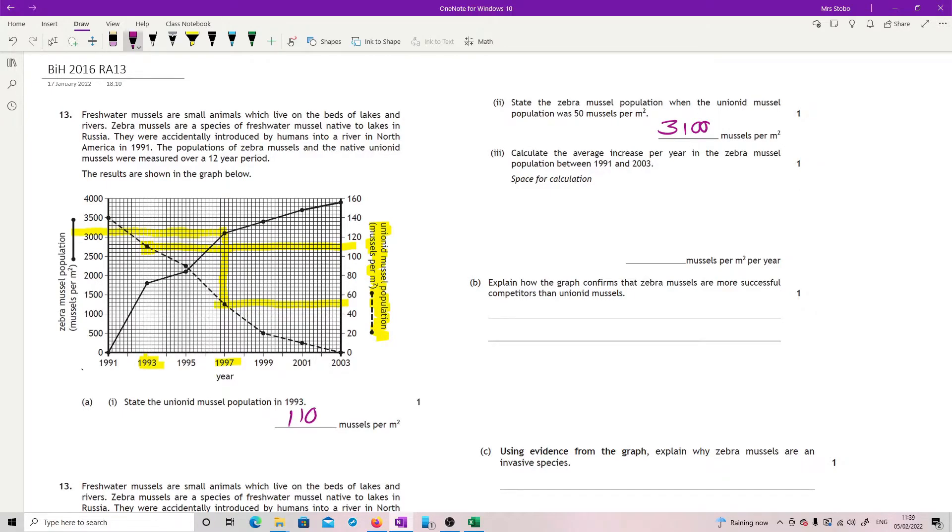Calculate the average increase per year in the zebra mussel population between 1991 and 2003. Okay, so we're looking at the zebra mussel population, so I'm looking at the solid line and I'm reading to this side. So at 1991 it was at zero, and in 2003, top end here, we're at this point, so it goes to 3,900. It's asking for the average increase per year, so how much of that happened per year? You're told, if you can't do the count, that it's a 12 year period. Otherwise, obviously 1991 to 2003 is 12 years. So I just need to take 3,900 and divide by 12 to get you how many you increased each year. And that's 325 mussels per meter squared per year.